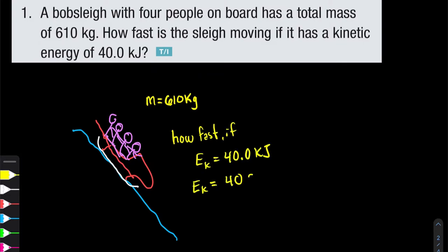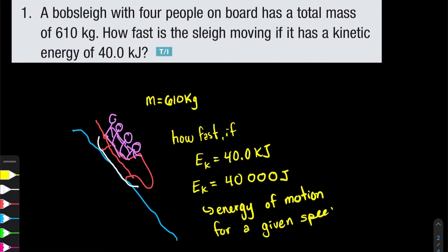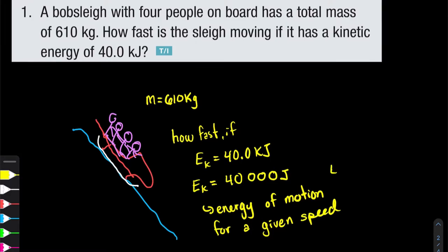So let's change the kilojoules to joules — multiply by a thousand — so 40,000 joules. Since kinetic energy is the energy of motion and we want to determine it at a single point in time, we're going to have to use the formula for kinetic energy, which is one-half mv squared. All we have to do is sub in the values and isolate for the speed.